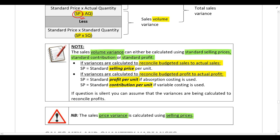If absorption costing is used, you are going to use the standard profit per unit. If variable costing is used, you are going to use the standard contribution per unit in your calculations, and you calculate the standard contribution by taking sales and deducting variable costs.